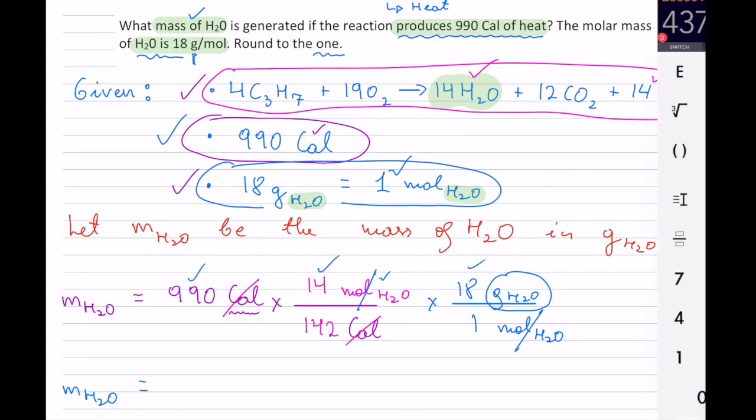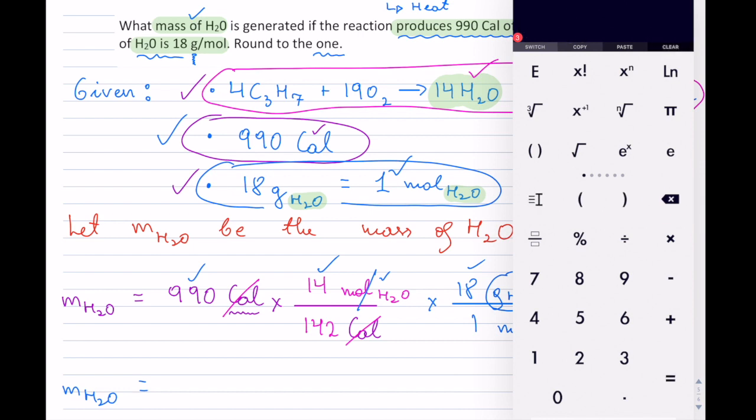I take all numbers on top and multiply them. So I have 990 multiplied by 14 multiplied by 18. I hit equals.